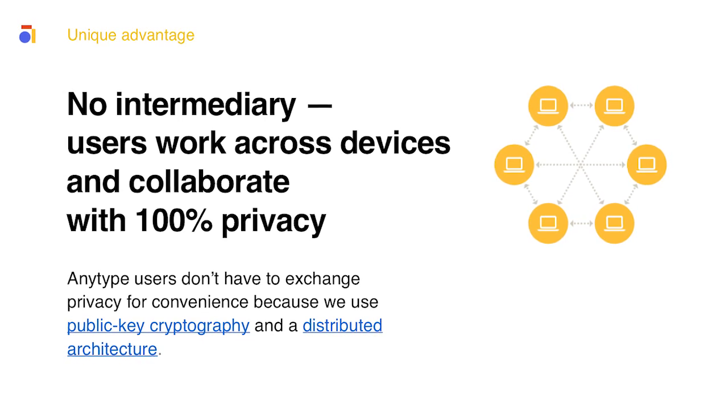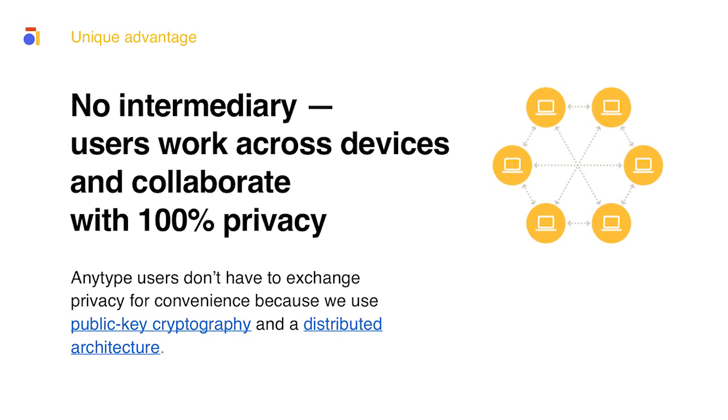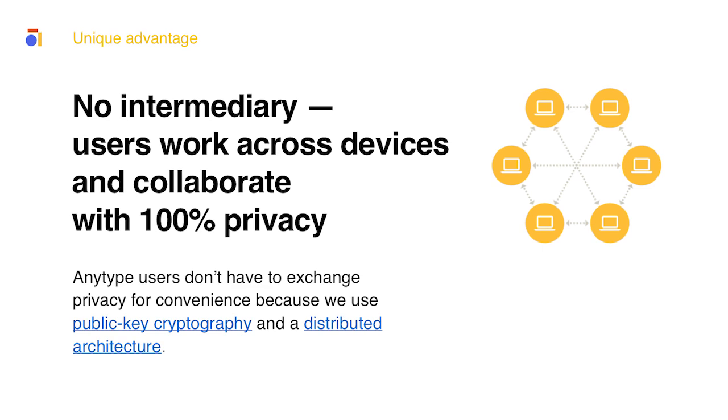The data goes the shortest way — it's faster. There is no server, no intermediary. No one can access our data. And because you and I now own our data, we can use it across all apps.